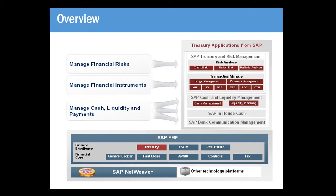The transaction manager has full capabilities to manage a wide range of financial product types, such as money market product types — for example, fixed-term deposits and deposits at notice — foreign exchange transactions such as spot and forward transactions, derivatives such as interest rate swaps, debt, securities such as stocks and bonds, and commodities. There are two related sub-components within the transaction manager, which are exposure management and hedge management.